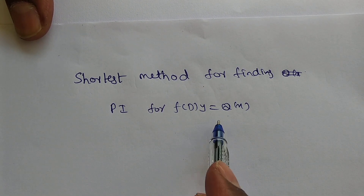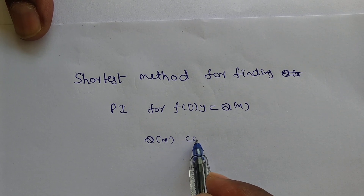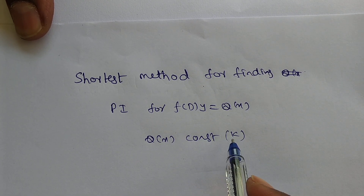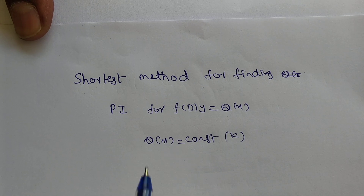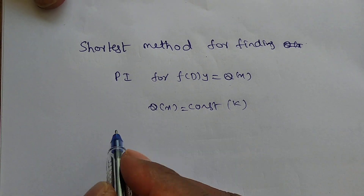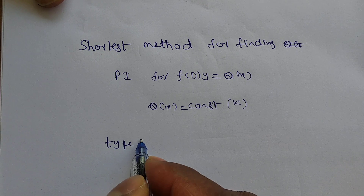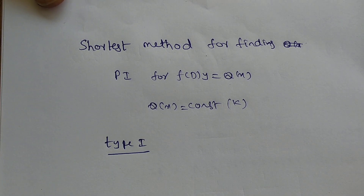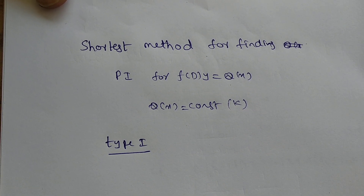This is Form 1, or Type 1. We have different types and we will discuss each type in separate videos. Type 1 applies when q(x) is a constant — that may be k.